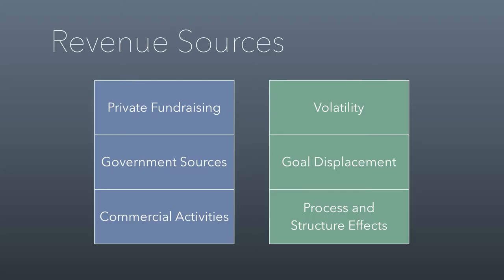Let's talk about nonprofit revenue sources. There are three primary funding sources for nonprofits: private fundraising, government sources, and commercial activities. The author evaluates these according to the volatility of the revenue source, the effect the revenue source has on goal displacement — meaning getting the nonprofit to do something different than they would otherwise do — and also process and structure effects, meaning how do these revenue sources change the way nonprofits operate internally? We're going to go through each of the three revenue sources and evaluate them by each of the three attributes.